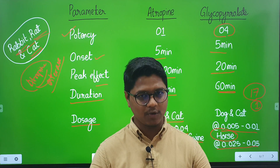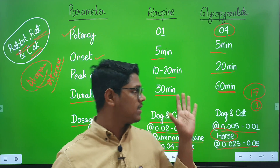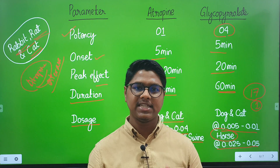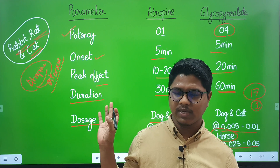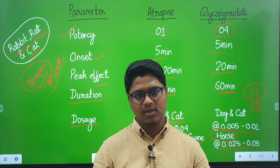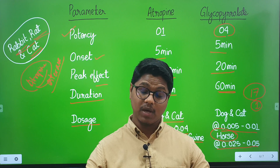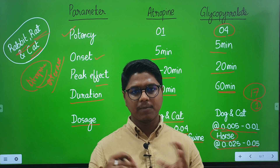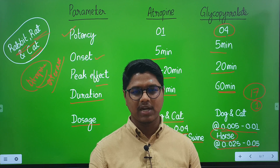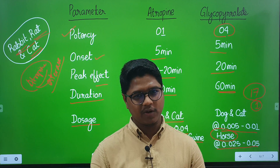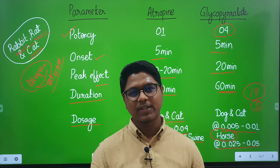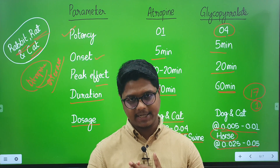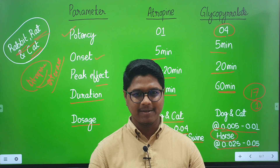So this is all about the anticholinergics. This is a very short class — we will study all the chapters in this concise manner so that you can remember all the chapters easily in the class itself. You can make your own notes, but if you want to know more, you can read the Lumb and Jones Veterinary Anesthesia and Analgesia book for more knowledge. Next class, we will go for the phenothiazine group — the sedatives: phenothiazines, butyrophenones, and opioids. We will start sedatives from next class. Till then, bye-bye, take care.